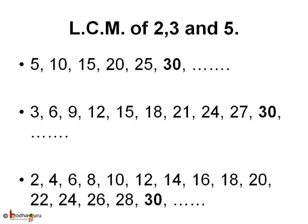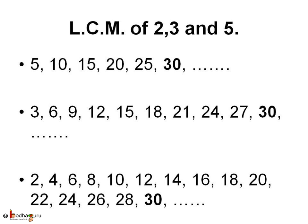Not just 2 numbers — we can find the LCM, that is the least common multiple, of 3 or more numbers also. Now, we will find the lowest common multiple of 2, 3 and 5. The multiples of 5 are 5, 10, 15, 20, 25, 30. And the multiples of 3 are 3, 6, 9, 12, 15, 18, 21, 24, 27, 30. And lastly, the multiples of 2 are 2, 4, 6, 8, 10, 12, 14, 16, 18, 20, 22, 24, 26, 28, 30. So, what do we see? The LCM of 2, 3 and 5 is 30.